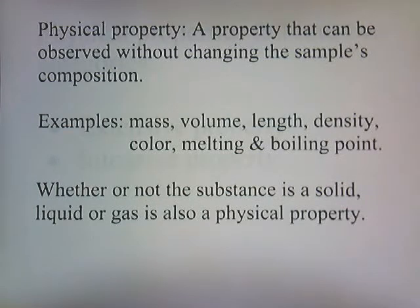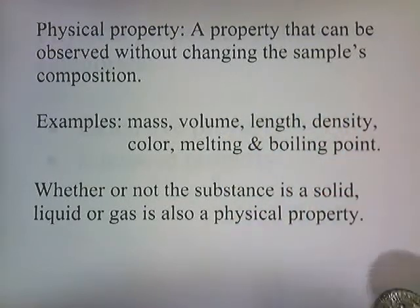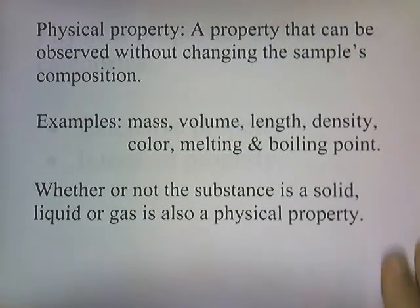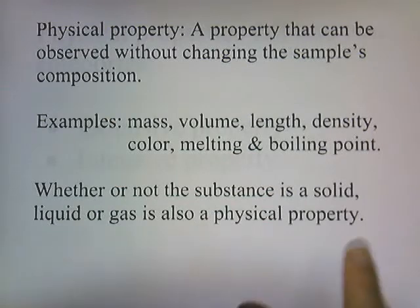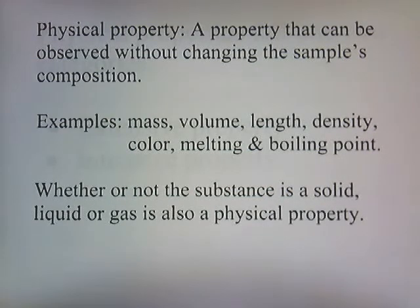A physical property is a property that can be observed without changing the sample's composition. For example, the mass of an object — how heavy it is — you can tell how heavy something is without changing it into a new substance. Volume, length, density, color, melting and boiling point — all these things you can measure and observe without changing the identity of the substance. Whether or not a substance is a solid, liquid, or gas is also a physical property.